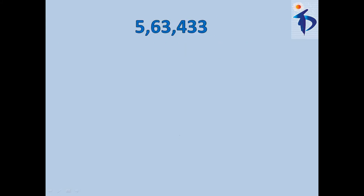Here the number I have taken is 5,63,433. So now I take the last three digits of this given number, that is 433. So I take 433 divided by 8, and the remainder is 1.